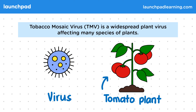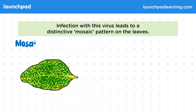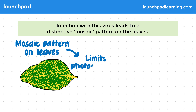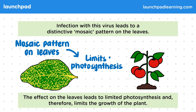Why is this a potential issue? Infection with this virus leads to a distinctive mosaic pattern on the leaves. This mosaic pattern creates areas of the leaves where photosynthesis will be limited. The effect on the leaves leads to limited photosynthesis and therefore limits the growth of the plant, leading to stunted growth and therefore limiting the yield.